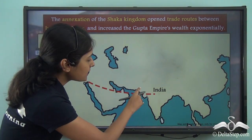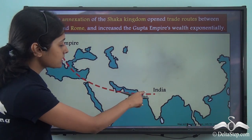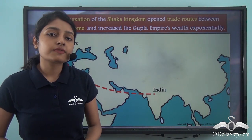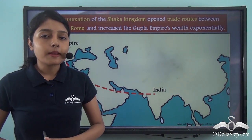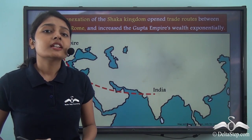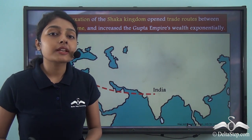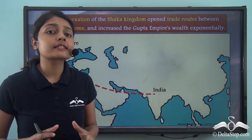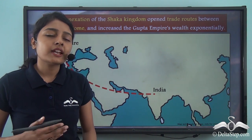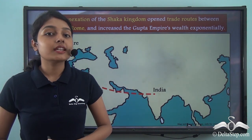How was this possible? When the western part of the Indian subcontinent was under his control, he could establish a trade route with the Roman Empire. A trade route between the Roman Empire and the Gupta Empire was very significant, because the Gupta Empire was able to trade different items with the Roman Empire. This helped in the increase of the wealth of the Empire exponentially. So this explains why Vikramaditya was very keen on expanding his Gupta Empire to the western part of the Indian subcontinent.